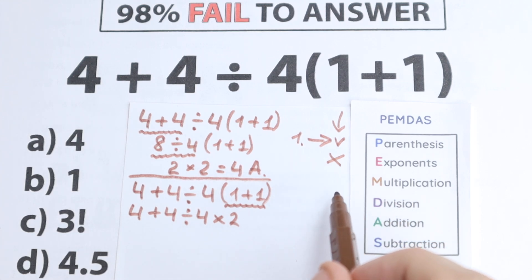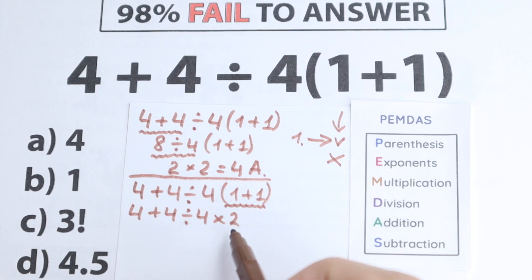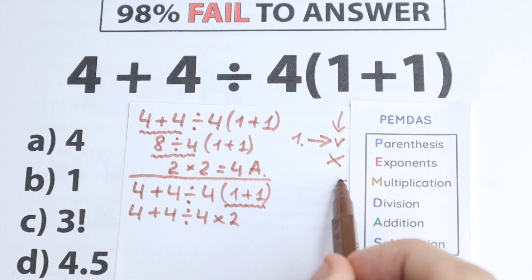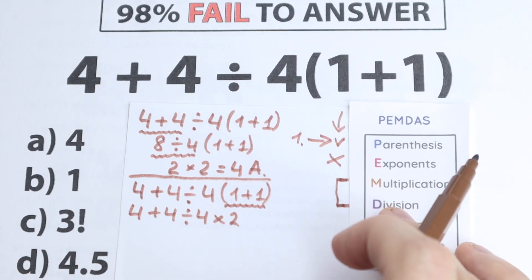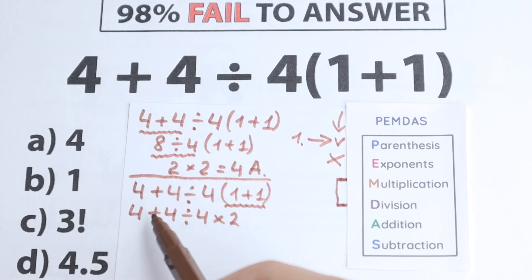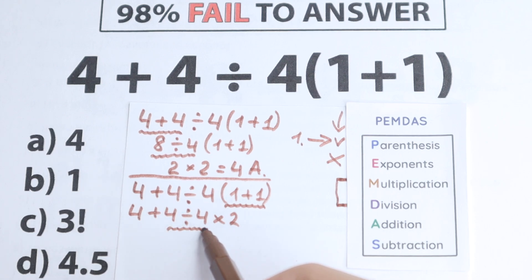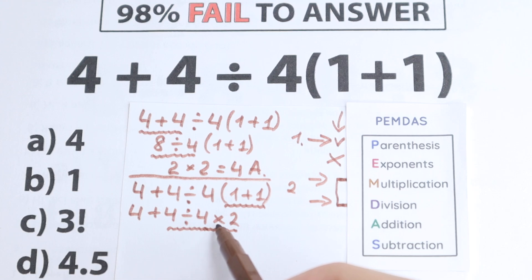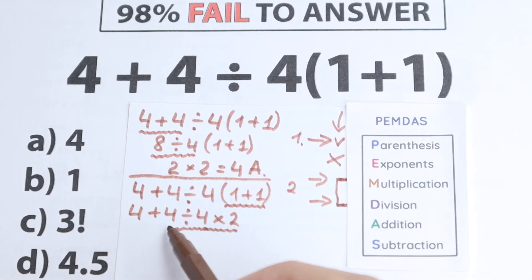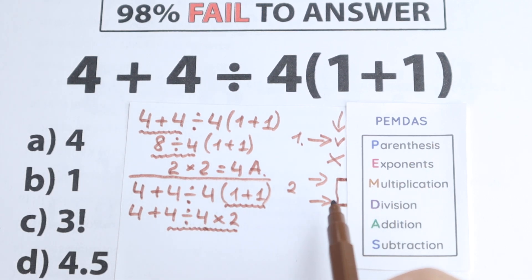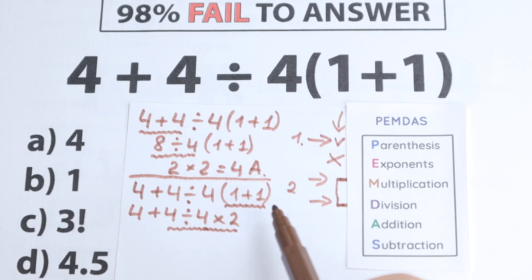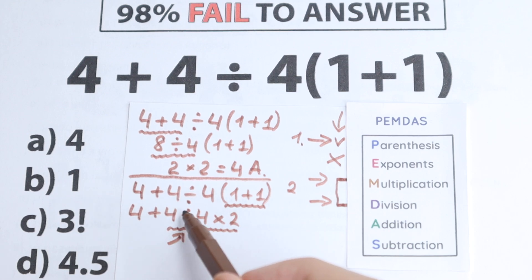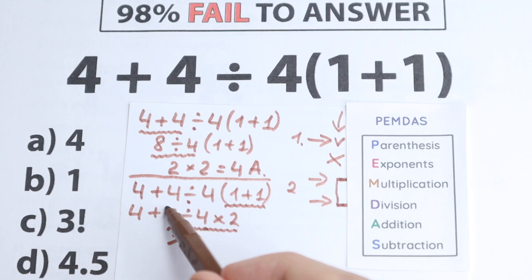Next is Multiplication and Division. A common mistake is to immediately multiply 4 times 2, but according to PEMDAS we need to look at multiplication and division as one group, and find the first sign from left to right. Multiplication and division are one common group, so we scan left to right: the first sign we encounter is the division sign. So we do 4 divided by 4 equals 1, giving us 4 plus 1 times 2.